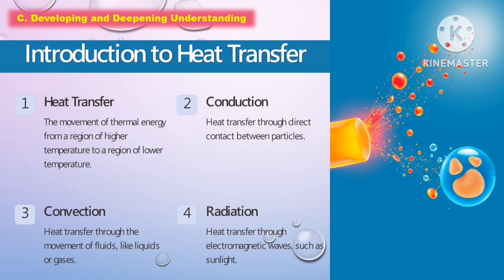The movement of thermal energy from a region of higher temperature to a region of lower temperature is what we call heat transfer. Conduction is the heat transfer through direct contact between the particles. Convection is the heat transfer through the movement of fluids like liquid or gases. And radiation is the heat transfer through electromagnetic waves such as sunlight.